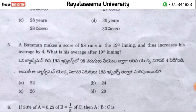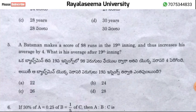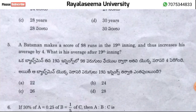Question number 5: A batsman makes a score of 98 runs in the 19th innings and increases his average by 4. We need to find his average after the 19th innings. Setting up the equation from the innings average relationship gives us the answer.